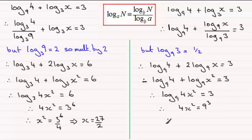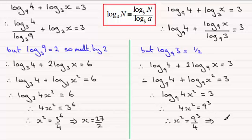Divide both sides by 4 and you get x squared equals 9 cubed divided by 4, and then if you take the square root to both sides here you end up with exactly the same result as we had before, x equals 27 divided by 2.